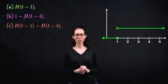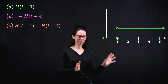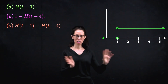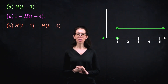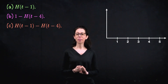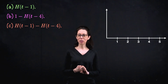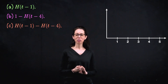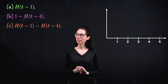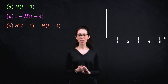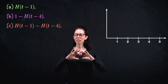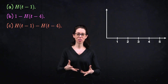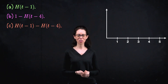Take a moment now that you've seen the kind of shifting we're going to do. See if you can work through what the graph of part b would look like: what would it look like if I wanted to graph one minus h of t minus four?